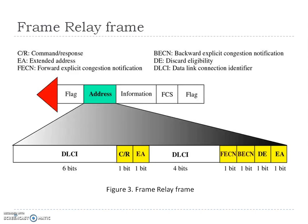The Frame Relay frame has: flag, address, information, FCS, and then flag again. In the address field, the first six bits of the first byte make up the first part of the DLCI, and the second part of the DLCI uses four bits of the second byte. These bits are part of the 10-bit data link connection identifier defined by the standard. The C/R (Command/Response) bit is provided to allow upper layers to identify a frame as either a command or a response.